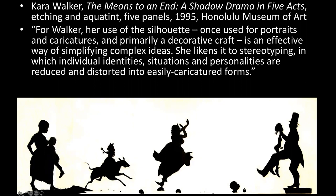This one's called 'The Means to an End: A Shadow Drama in Five Acts.' She's very precisely cutting out these silhouettes — maddeningly precise — and then arranging them, sometimes in different arrangements depending on where it's being exhibited, to create these narratives. For Walker, the silhouette — once used for portraits and caricatures and primarily decorative craft — is an effective way of simplifying complex ideas. She likens it to stereotyping, where individual identities, situations, and personalities are reduced and distorted into easily caricatured forms.